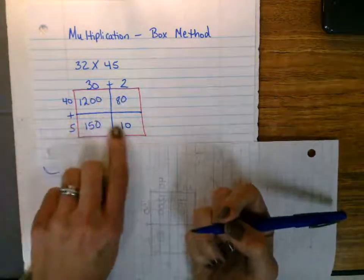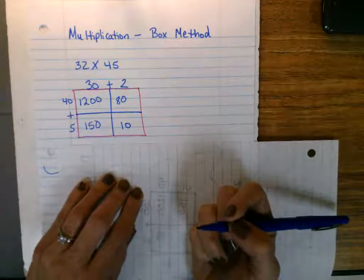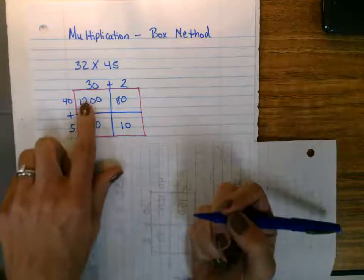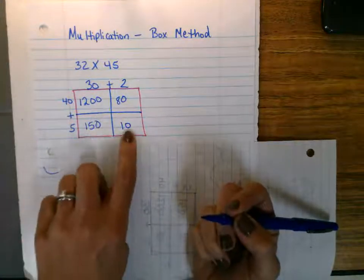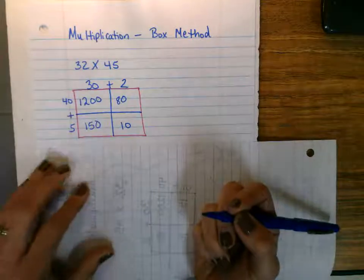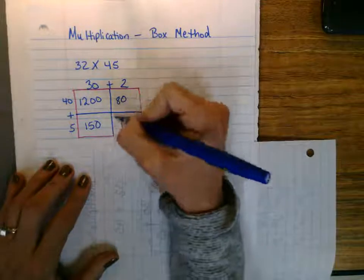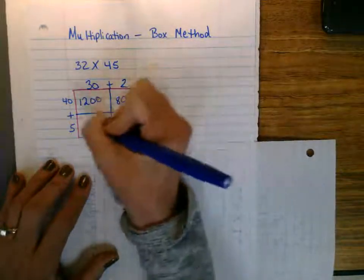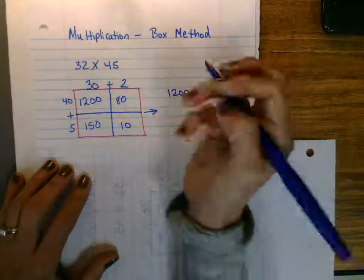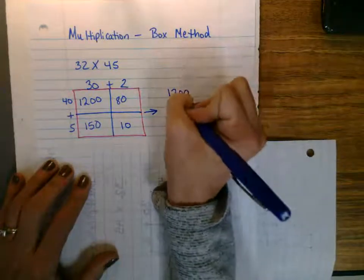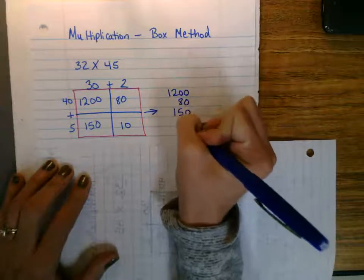So now I have my four partial products, and to get my final product, I'm going to need to add these together. So what I really like about this, it really shows that we have 1,200, 80, 150, and 10, and we can just add up those products together to get a total. So if some kids are getting really good about mental math, they can add it any way they like. Sometimes they like to add all four, sometimes they add two and two. However, as long as we end up with the same final product.